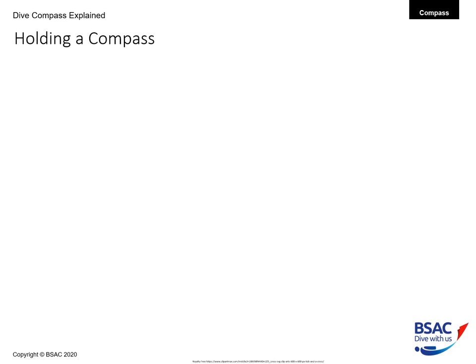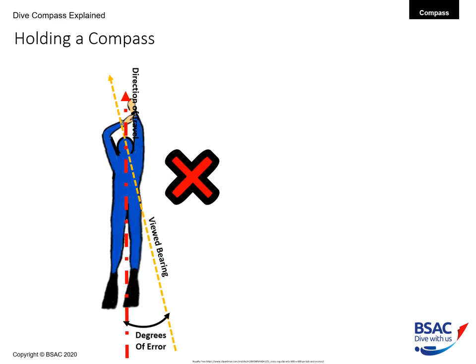Holding your compass correctly is very important to reduce error. We mentioned that wrist-mounted and console-mounted compasses were very difficult to position correctly. This is because you need to position your compass down the centre line or axis of your body. If you don't do that, your viewed bearing will be off-centre, meaning your direction of travel will differ from your viewed bearing, and you will have a number of degrees of error.